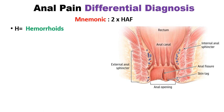The first H stands for hemorrhoids, which is the most common cause of anal pain. The second H stands for hematoma — if it occurs, it can also cause anal pain. So those are the two H's.